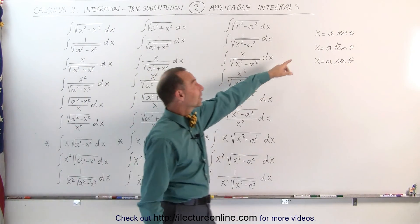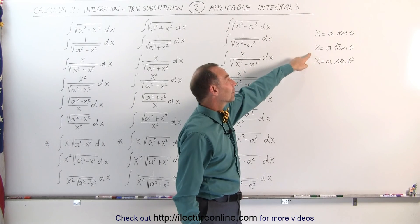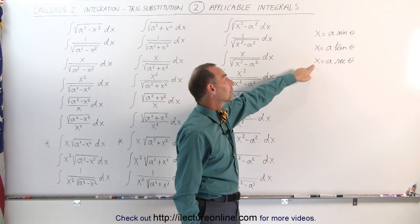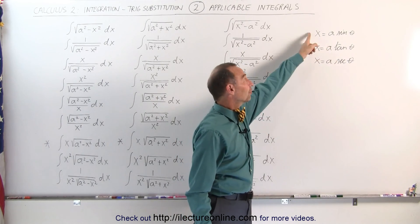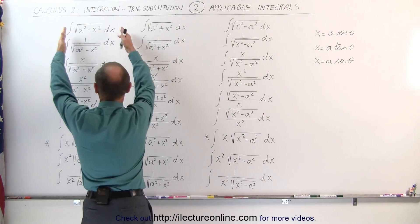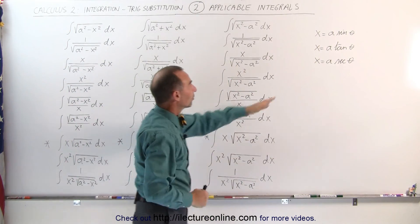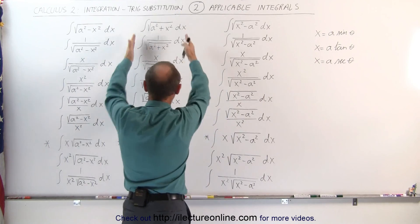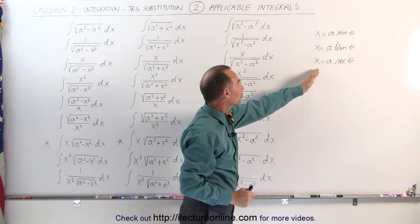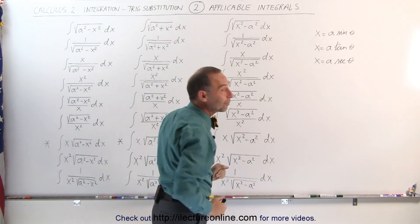with the trig substitution x equals a sine theta, x equals a tangent of theta, and x equals a secant of theta. The first substitution works for these types of integrals. The second substitution works for these types of integrals, and the third substitution works for these types of integrals.